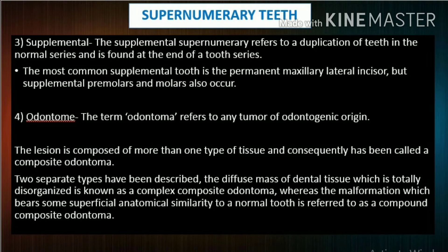Odontome — the term odontoma refers to any tumor of odontogenic origin. The lesion is composed of more than one type of tissue and consequently has been called a composite odontoma. Two separate types have been described: a diffuse mass of dental tissue which is totally disorganized is known as a complex composite odontoma, whereas the malformation which bears some superficial anatomical similarity to a normal tooth is referred to as a compound composite odontoma.